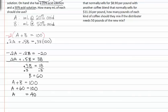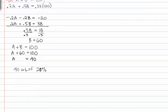We now know that we need 40 milliliters of 20 percent acid, and we need 60 milliliters of 50 percent acid.